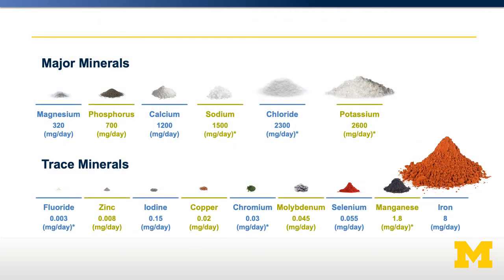Shown here is a comparison of the requirements of the various minerals — the major and the minor minerals. This illustrates that there's a very large range of how much of each mineral we need. This depends on what they're used for in the body, how many enzymes require that particular mineral, and also on our ability to absorb and store those minerals in our bodies.